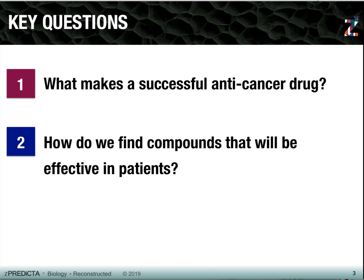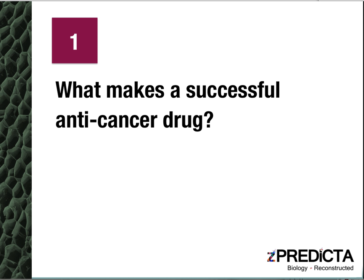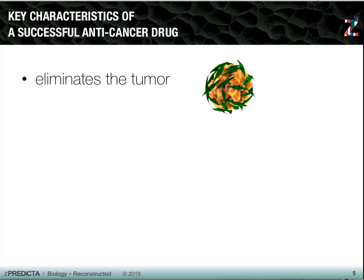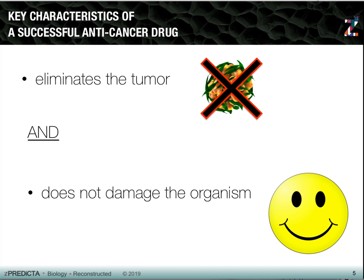The two key questions in drug development and finding successful treatments for cancer are: one, what makes a successful cancer drug—what characteristics does the compound have to have to really be successful? And question two, which we're going to spend most of the time on today, is how do we find these compounds, how do we identify the drug candidates that will actually be effective in patients? The two main characteristics of a successful anti-cancer drug are: one, the compound has to eliminate the tumor, and two, it cannot damage the organism.